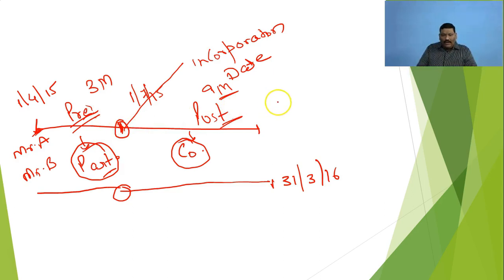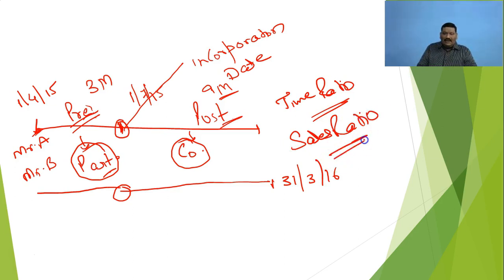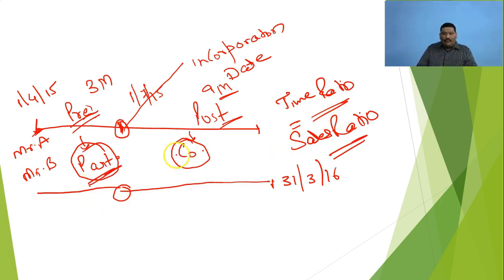We have to distribute our gross profit or our net profit in the ratio of pre and post. We have to calculate two ratios here. One is time ratio and the other ratio is sales ratio. This is the basic criteria we have to follow in this chapter, so that we will know how much profit belongs to the partnership firm and how much profit will go to the company.